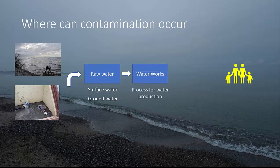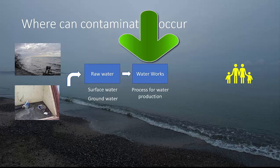Now let's go to the waterworks. Here we have several different treatment methods: flocculation, sedimentation, sand filtration. You can have membranes such as ultra filters, nano filters, or reverse osmosis membranes. You can have ozone, carbon filters, and slow sand filtration. There are many different types of unit operations that can be combined with each other, so there's a multitude of different setups. Within the waterworks you can also have contamination, but this is the place where you can really stop the contaminants — it should remove everything you don't want in the drinking water.